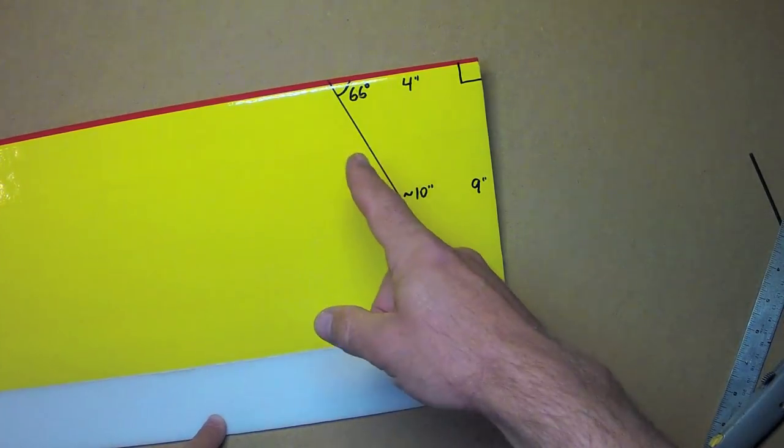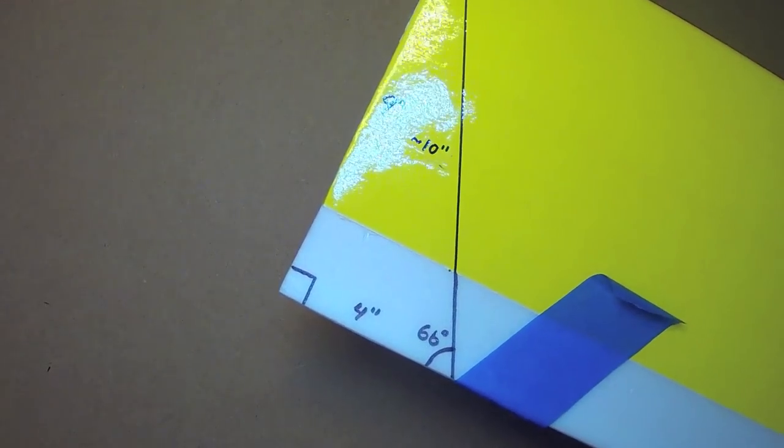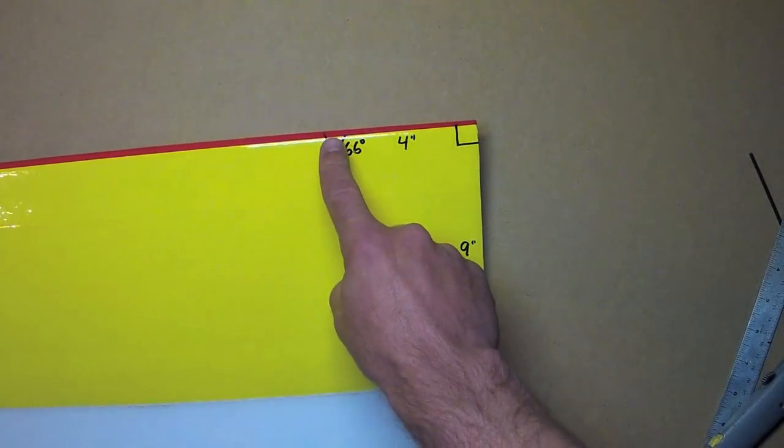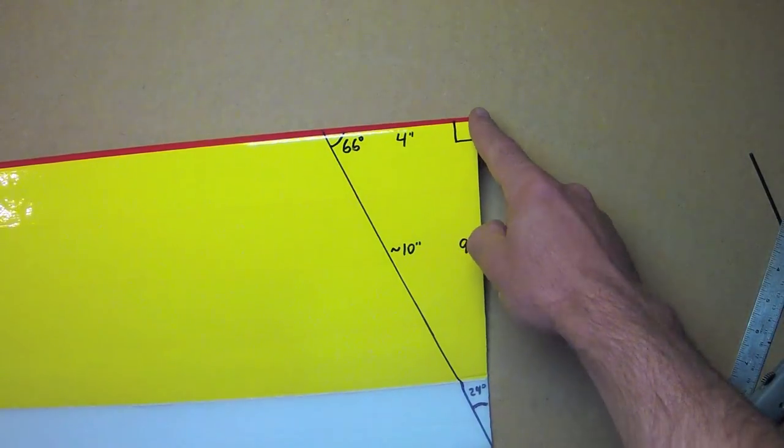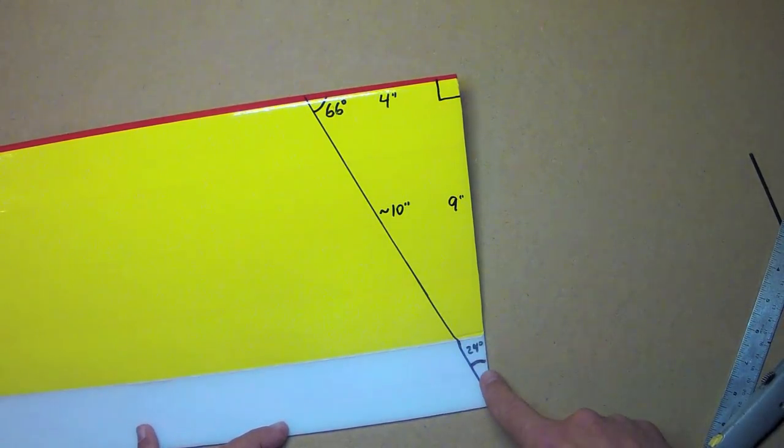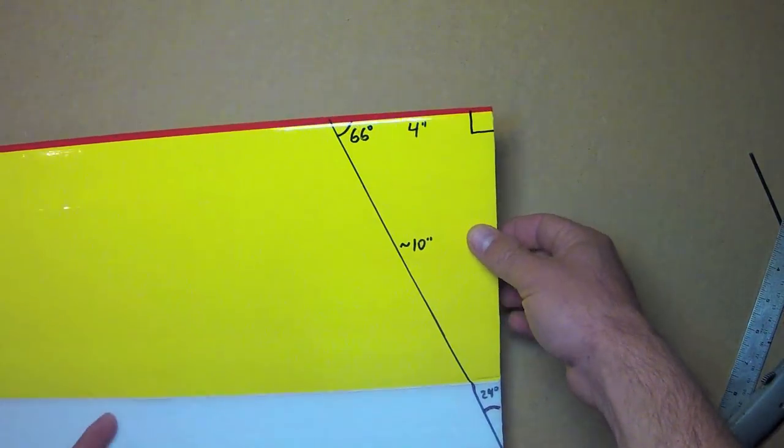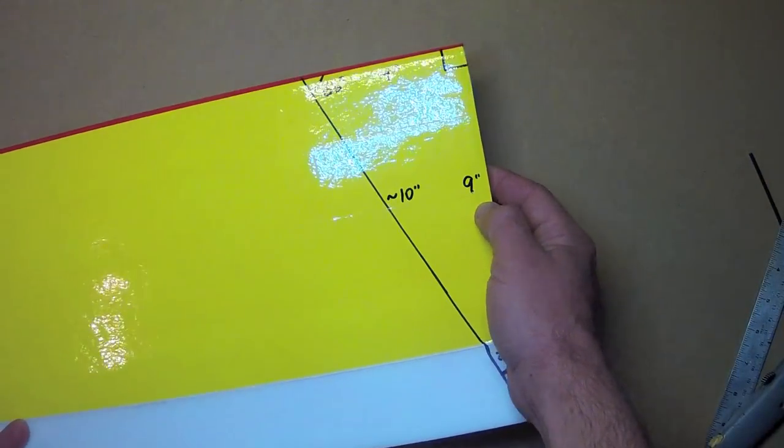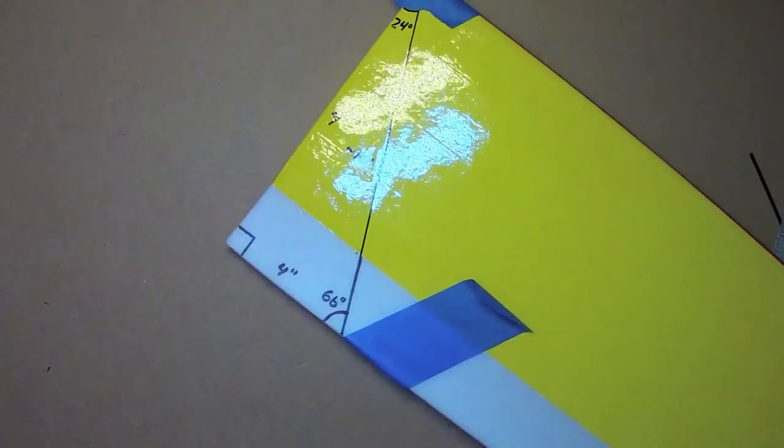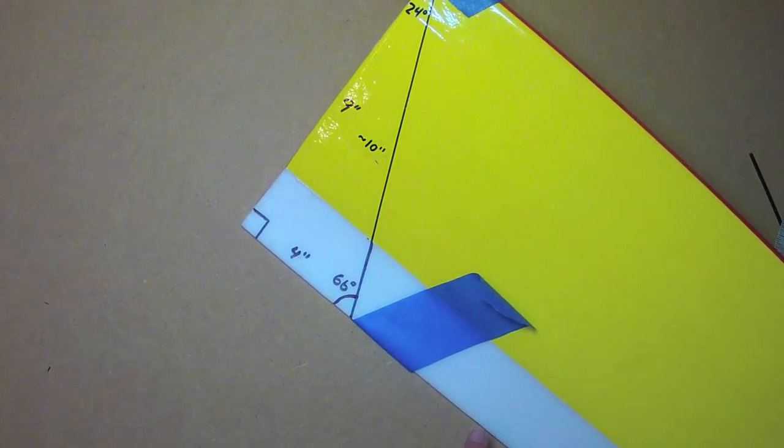Here is the tip of the Synapse wing with the reciprocal layout as the root. Instead of removing material from the trailing edge, we'll be removing material from the leading edge. 4 inches here. This is a 9-inch cord. This is about 10 inches. And again, 24 degrees, 66 degrees, and 90 degrees right angle there. Repeat this exact same procedure as done at the root. And then do that for your second wing, taking care that you remove the correct wing root, so you don't end up with two left or two right wings.